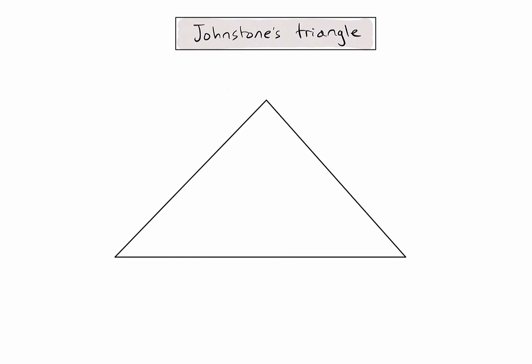Johnson's Triangle is a way of thinking about chemistry at three different levels: the macroscopic level, the submicroscopic level, and the symbolic level.